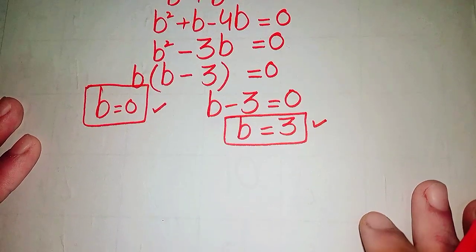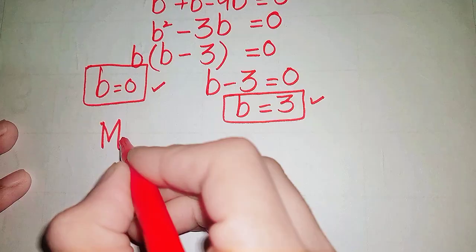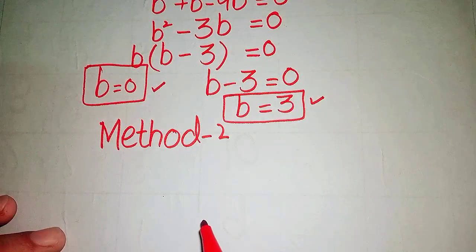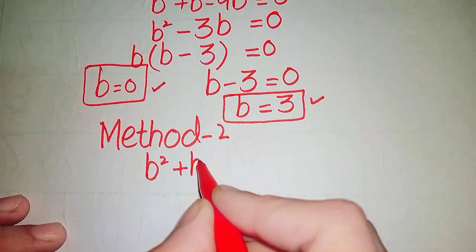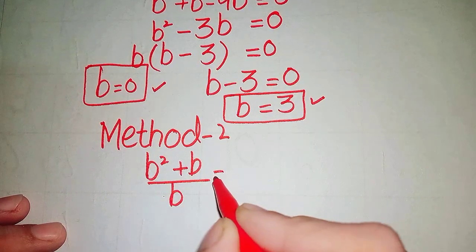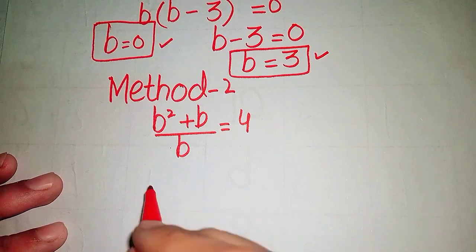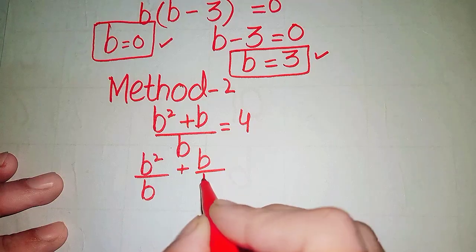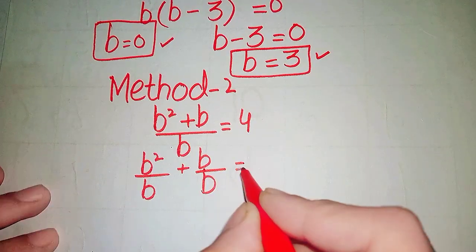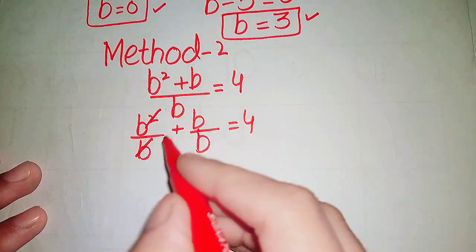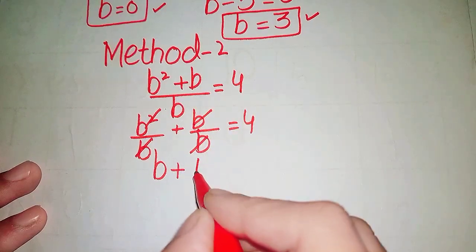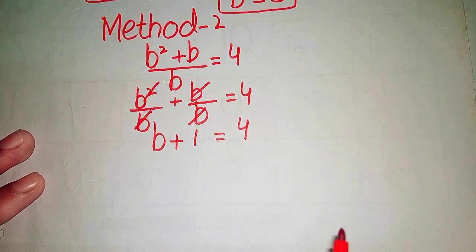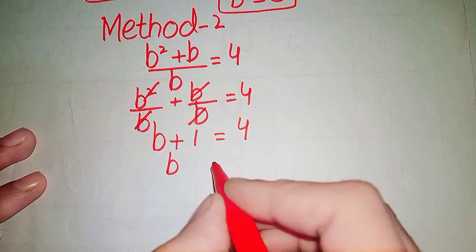In Method 2, we write (b squared + b) over b = 4 and separate the terms as (b squared / b) + (b / b) = 4. One b cancels with the other, giving b + 1 = 4.